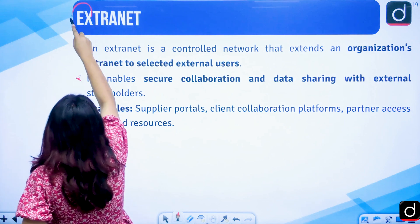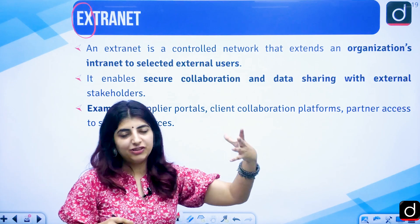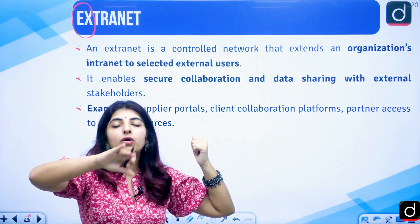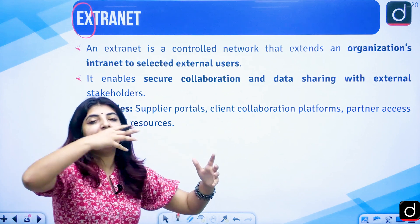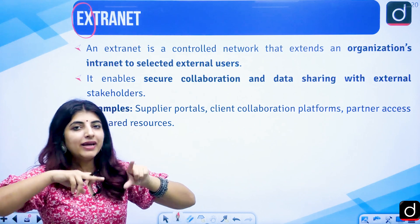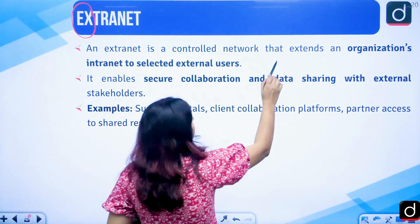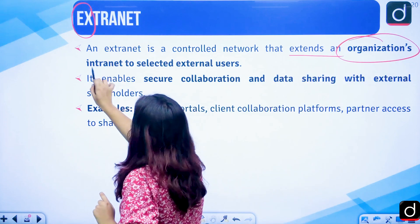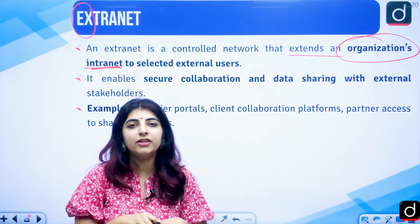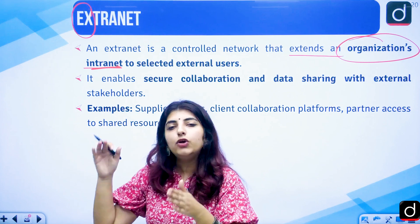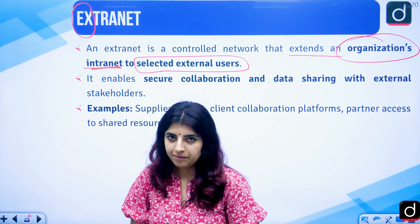Then we have extranet. The word starts with 'X', which means 'outside' — extranet connects outward. It is again a private network, but it extends documents to an external user. For example, it extends an organization's intranet — any documents or files you have on your private organizational network, you can share with selected external users by granting and authorizing them permission.